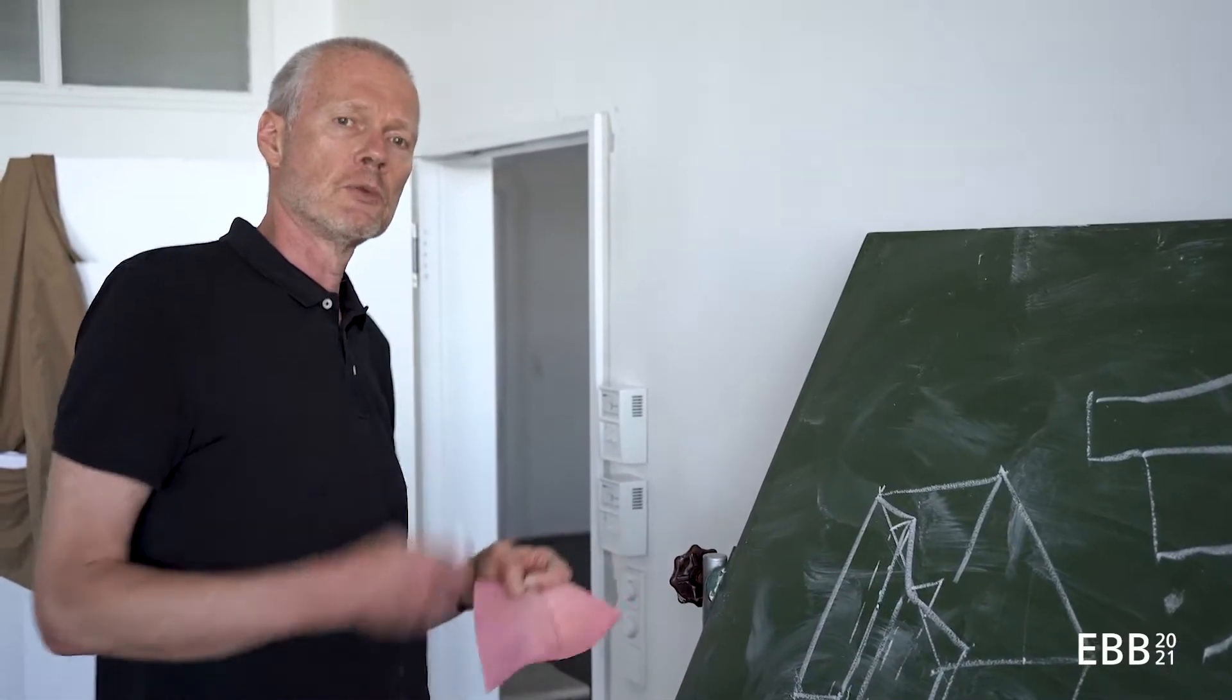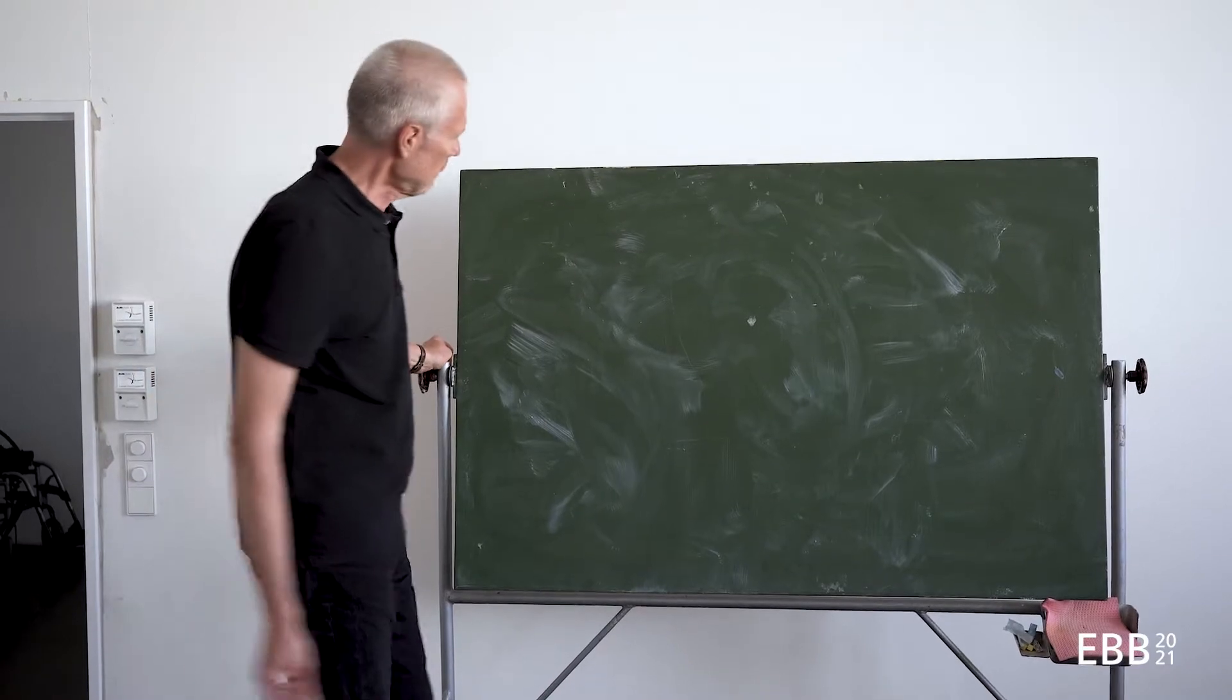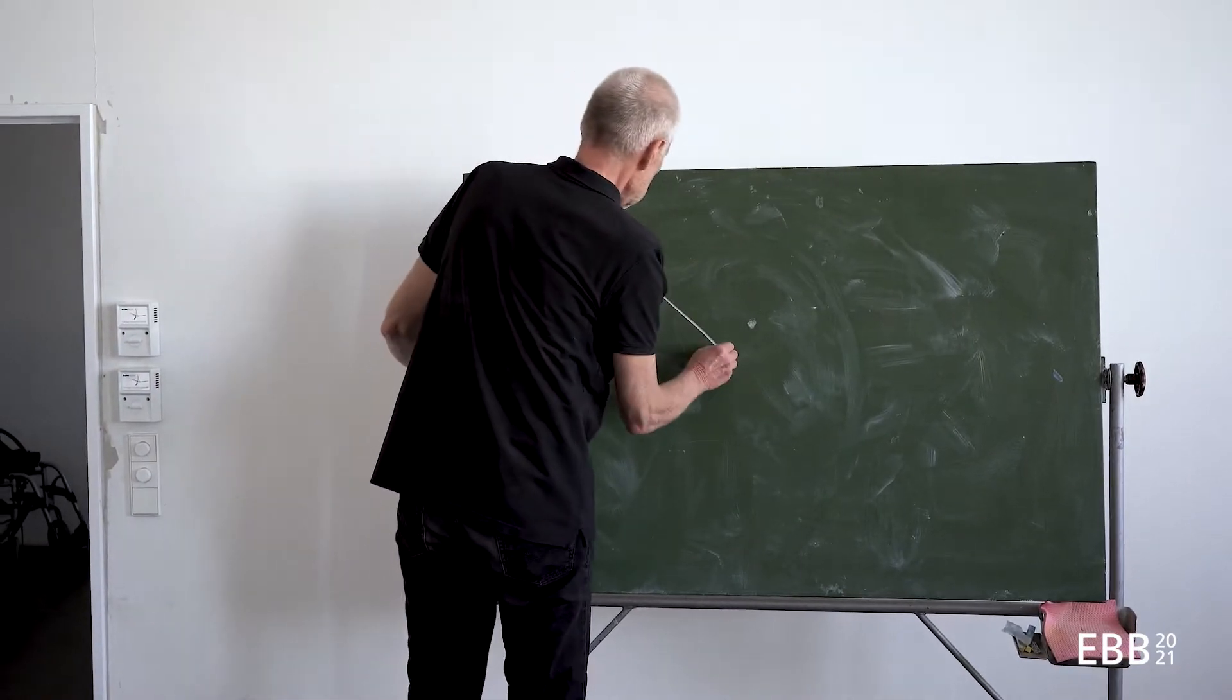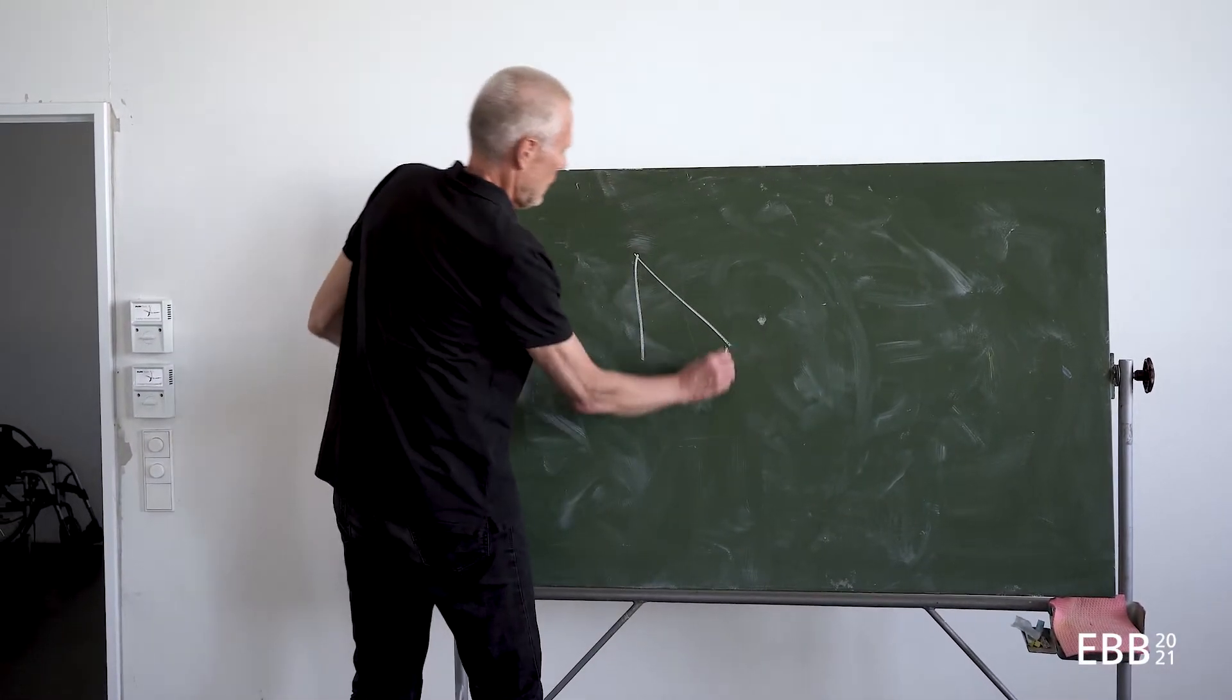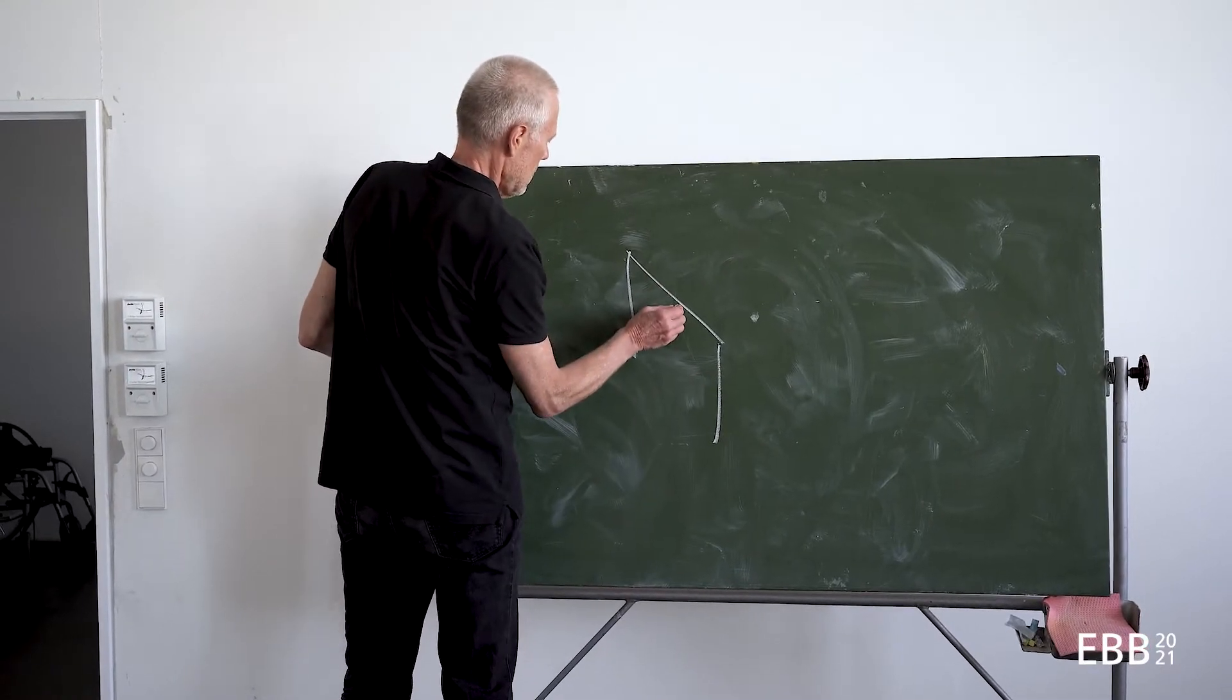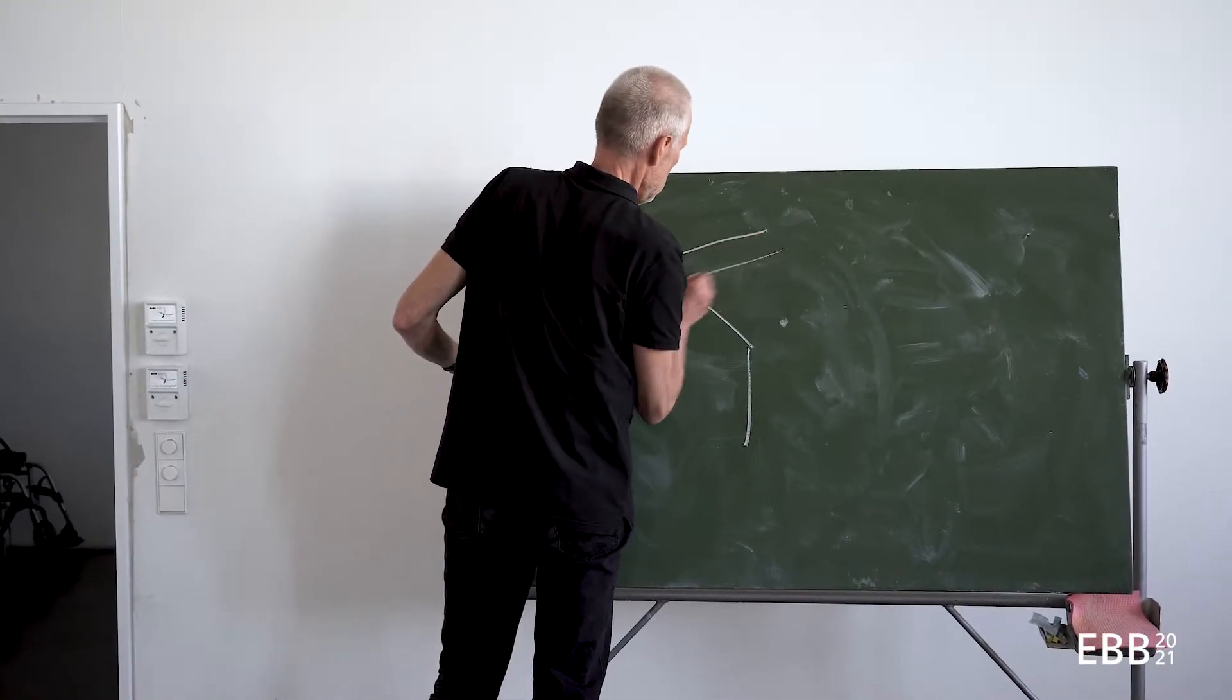So now I have a load bearing system: primary beam and secondary beams. Once again a primary beam which is supported by columns.